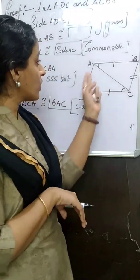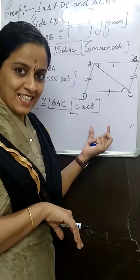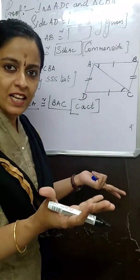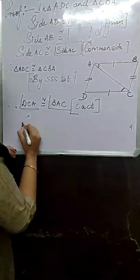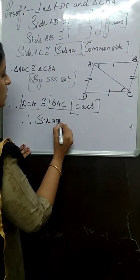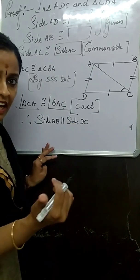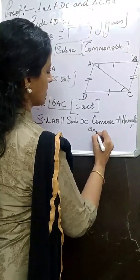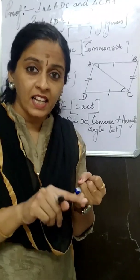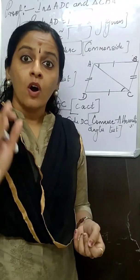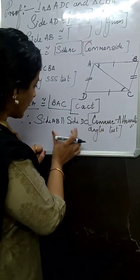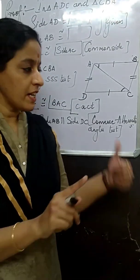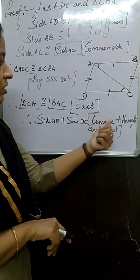These two angles are alternate angles. When alternate angles are congruent, the lines are parallel. Therefore, side AB is parallel to side DC, by the converse of alternate angles test. Always remember: when lines are given parallel, you write 'alternate angles test.' But here we are proving the sides are parallel from the angles, so we write 'converse of alternate angles test.'